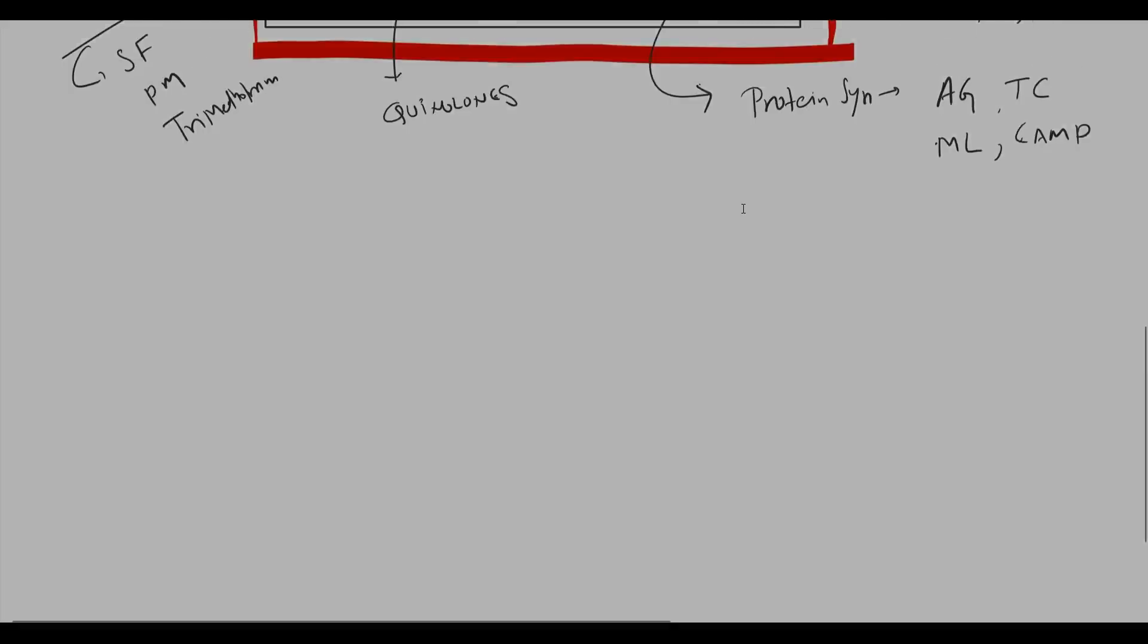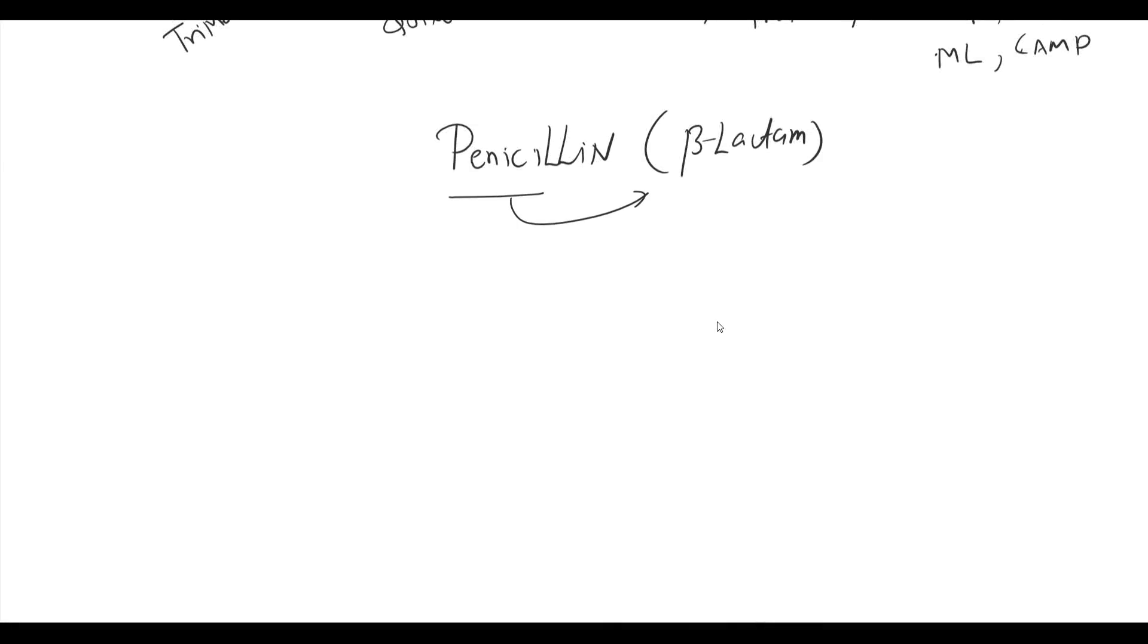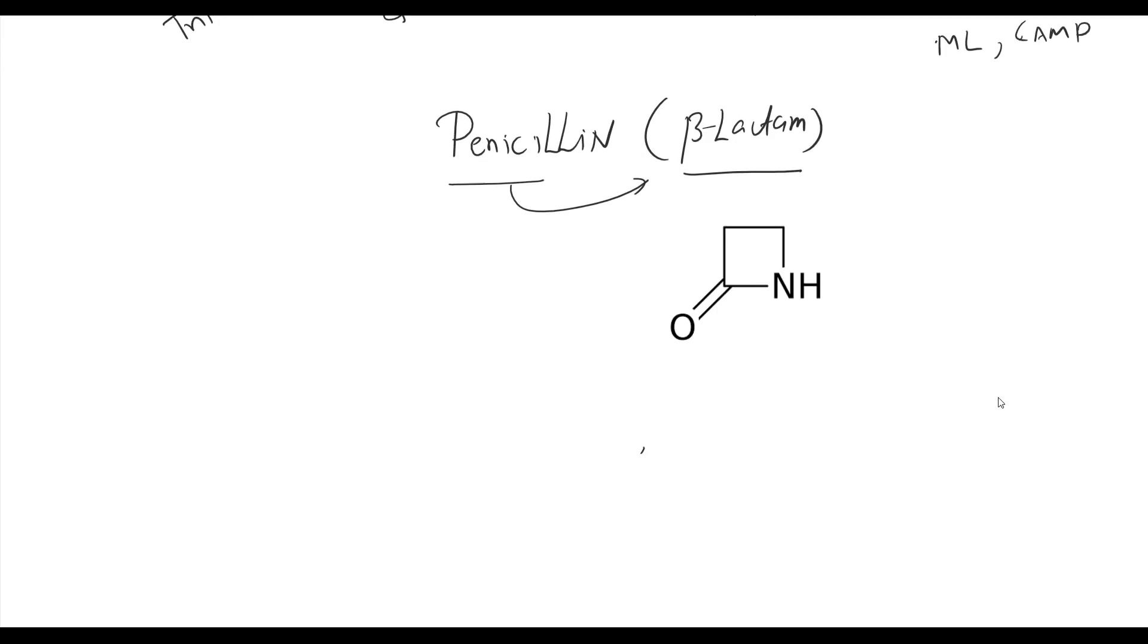We will start our discussion with penicillin. Penicillin is beta-lactam antibiotic. All beta-lactam antibiotics contain beta-lactam ring in their structure. Penicillin is oldest and largest group of antibiotics. First penicillin was discovered in 1930 and this group of antibiotics act by inhibiting synthesis of bacterial cell wall. Other antibiotics which act by similar mechanism include bacitracin, cycloserine, vancomycin, phosphomycin, and other beta-lactam antibiotics which include cephalosporin, carbapenem, and aztreonam.